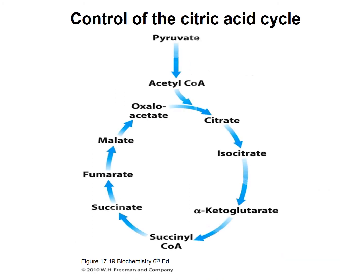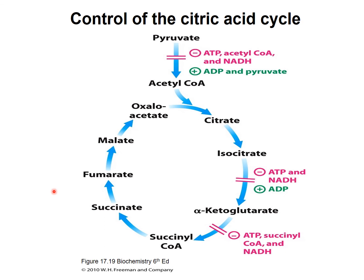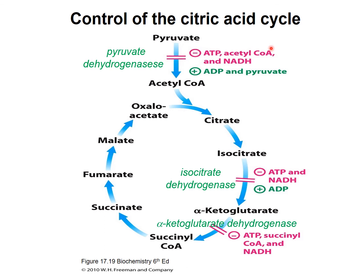The citric acid cycle is controlled through regulation of enzyme activity. PDH, or pyruvate dehydrogenase, is inhibited by ATP, acetyl coenzyme A, and NADH, as these molecules signify a high energy state, so the rate of reaction is cut down. Conversely, the same enzyme is activated by ADP and pyruvate. Similarly, other enzymes such as aconitase, isocitrate dehydrogenase, and alpha-ketoglutarate dehydrogenase are all inhibited by NADH or any other molecule signifying a high energy state.